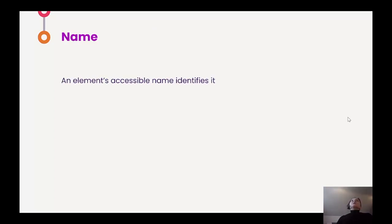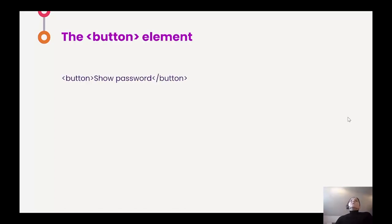The next piece of semantic information is the name, or accessible name, and this is what tells me what the button is for. In the case of a button element, the accessible name comes from the text that's inside the button element. Let's say it's a 'show password' button. When my screen reader queries the browser for information, the accessibility tree says it has a role of button and an accessible name of 'show password'. So I get to hear: 'Show password, button.' Two pieces of information coming together to tell me what this thing is and what I can do with it.